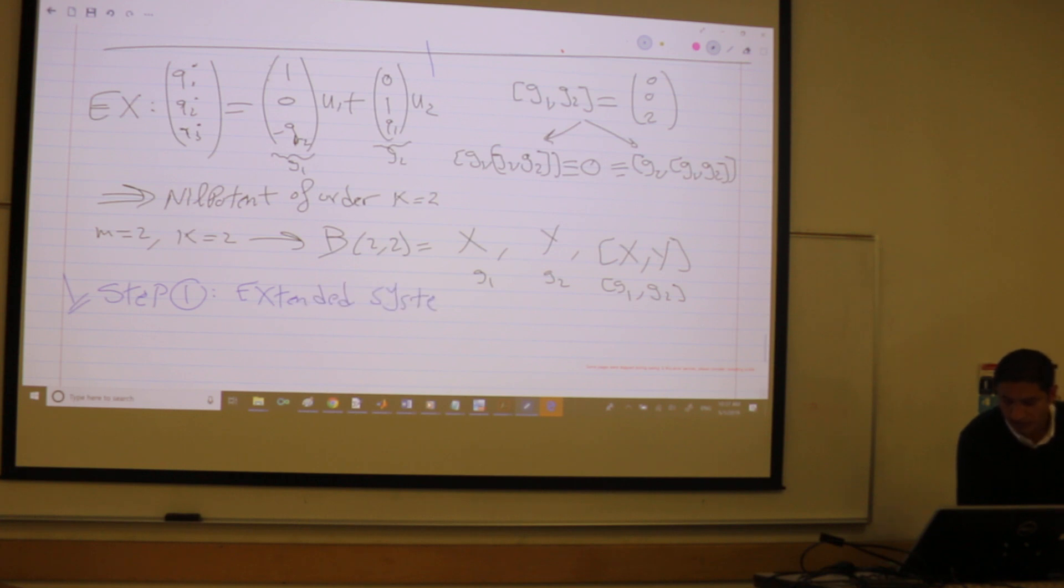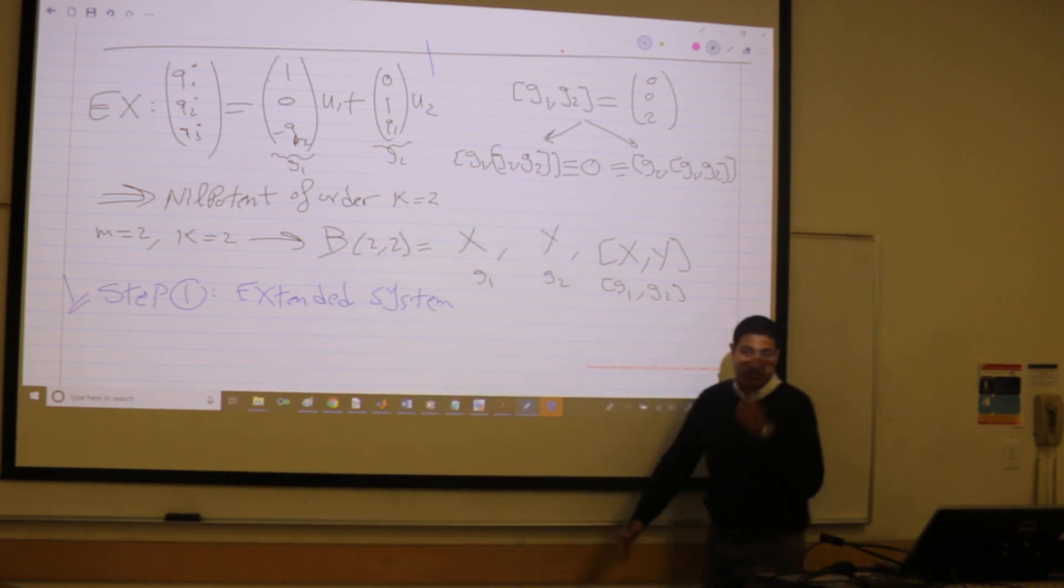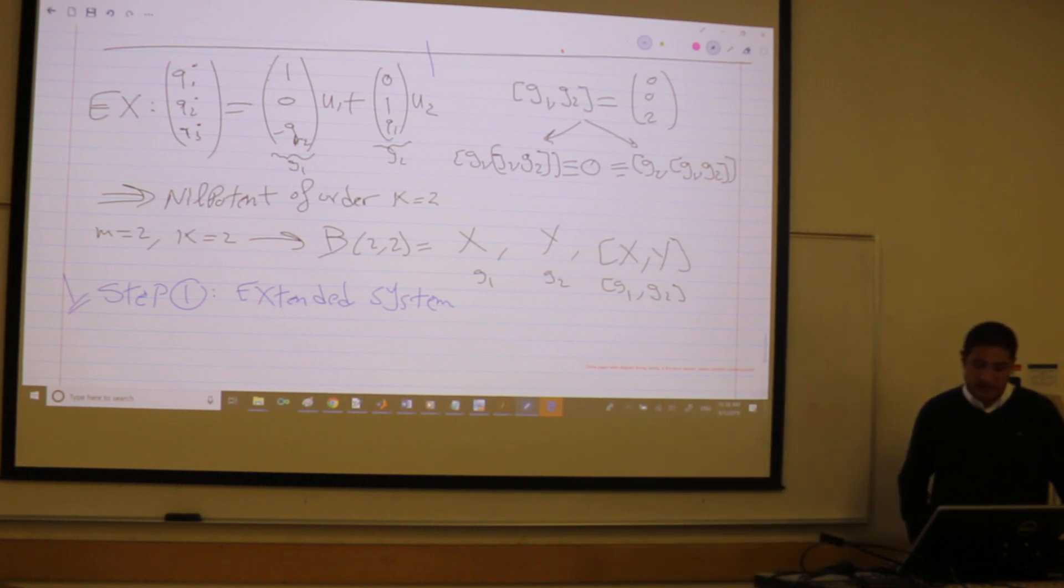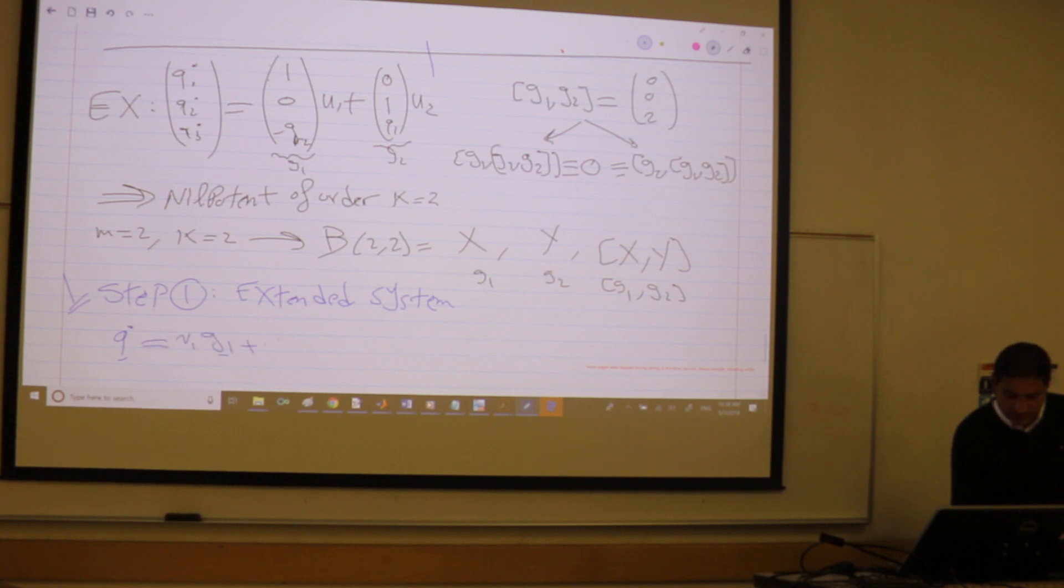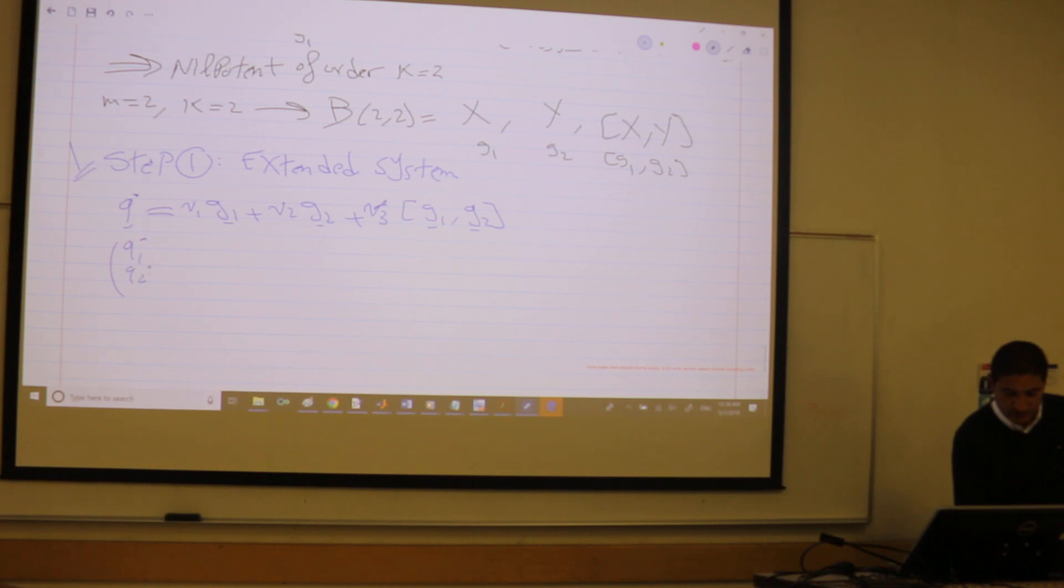Extended system. This is super easy. Why? Because I'm going to add one more input corresponding to the Lie brackets that I use to satisfy the LARC. The LARC is satisfied by the three vectors G1, G2, and Lie bracket [G1,G2]. Meaning, other problems you may need more. So you're going to go and add all the Lie brackets that you need. So I have Q dot is equal to V1 G1 plus V2 G2 as a system, as a dynamical system. And V3, a fictitious input that is corresponding to [G1,G2].